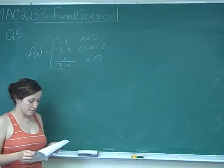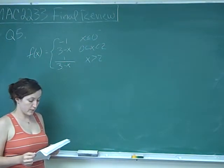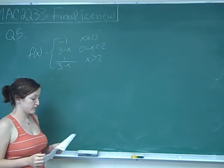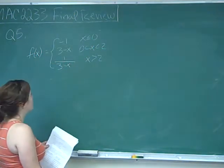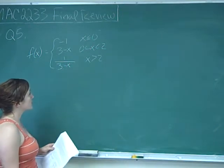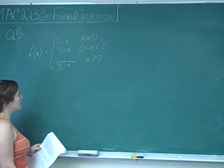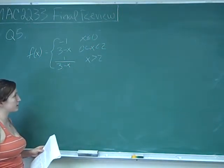This is question number 5, which asks which of the following statements are true. Let f(x) equal negative 1 when x is less than 0, 3 minus x when x is between 0 and 2, and 1 over 3 minus x when x is greater than 2.